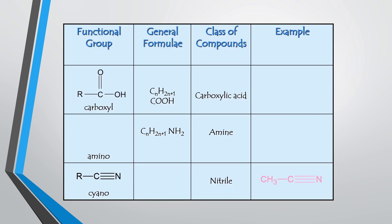The next functional group is carboxyl. The carboxyl group contains C double bond O (carbo) and OH (hydroxy). The combination of these two — carbo and hydroxy — gives the name carboxyl. The general formula for the carboxyl group is CnH2n+1COOH, and it belongs to the class of compound called carboxylic acid.